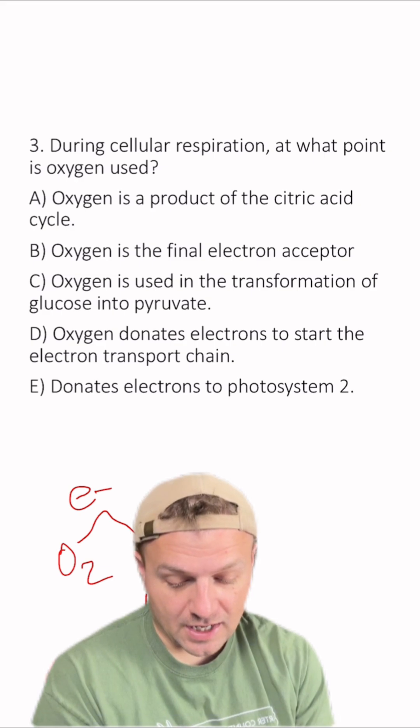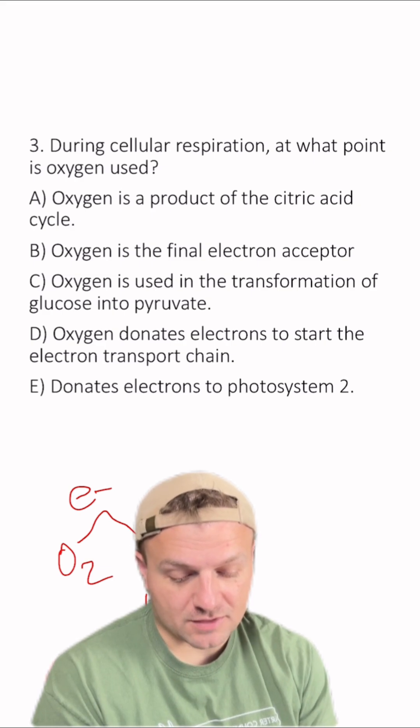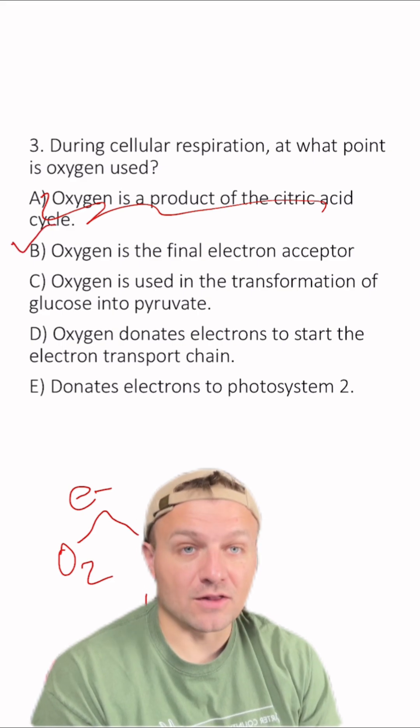So in this question, A, oxygen is a product of the citric acid cycle? Nope. B, oxygen is a final electron acceptor? That looks right.